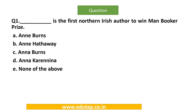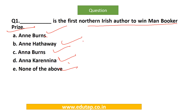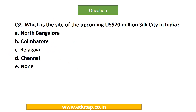MCQ: Who is the first Northern Irish author to win the Man Booker Prize — Anne Burns, Anne Hathway, Anna Burns, Anna Karenina, or none of the above? The correct answer is Anna Burns, for her novel 'Milkman.' Next question: Which is the site of the upcoming USD 20 million silk city in India — North Bangalore, Coimbatore, Belagavi, or Chennai? The correct answer is North Bangalore.